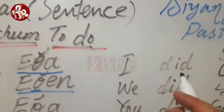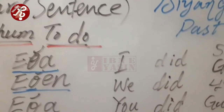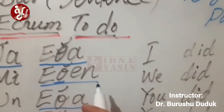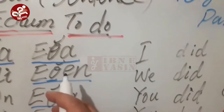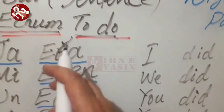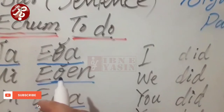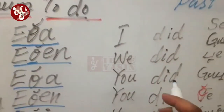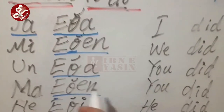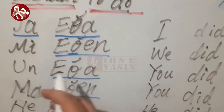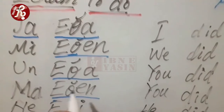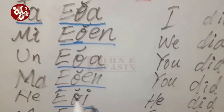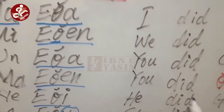So 'ja eta' means 'I did'. 'Mi eten' means 'we did'. The 'theta' sound in Burushaski gives the sound of 'te' or 'ti'. 'Un eta' means 'you did' — singular, one person. 'Ma eten' means 'you did' — plural, more than one person.